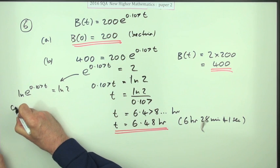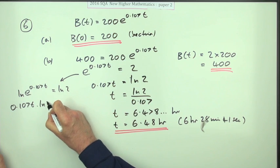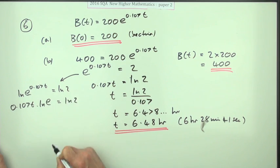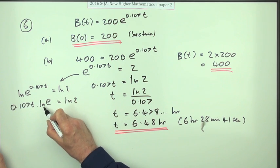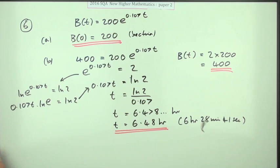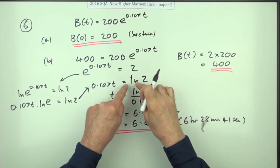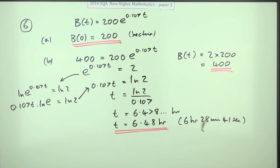That will pop to the front: 0.107t times ln of e equals ln 2. But since ln of e, log base e of e, is 1, that just becomes this line here, which inarguably is the inverse of the exponential.